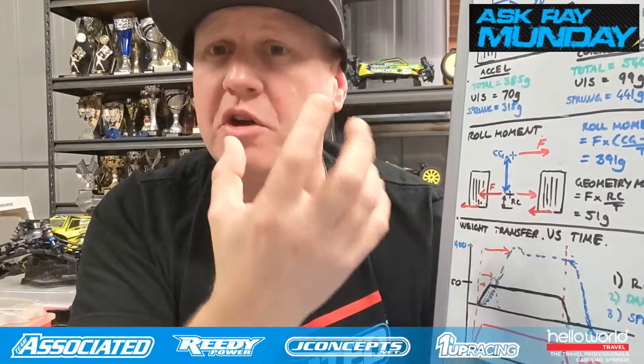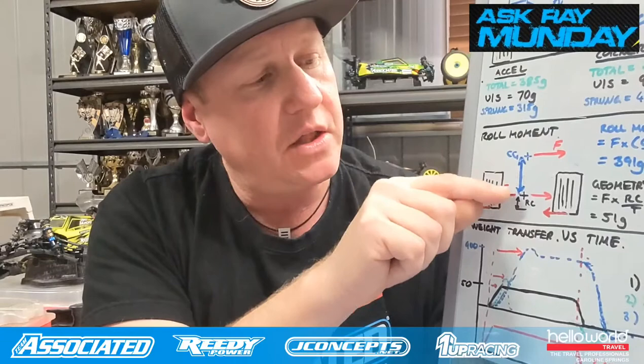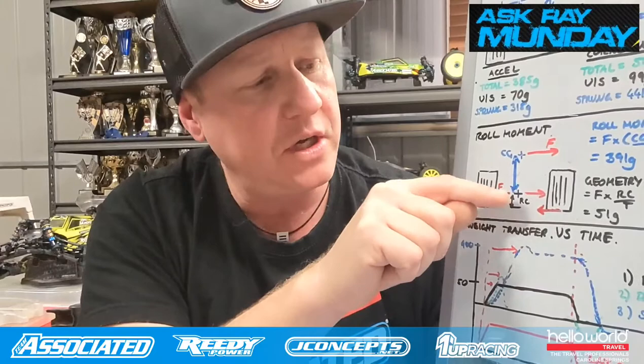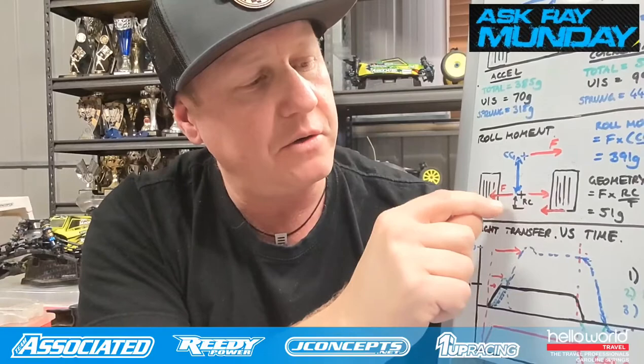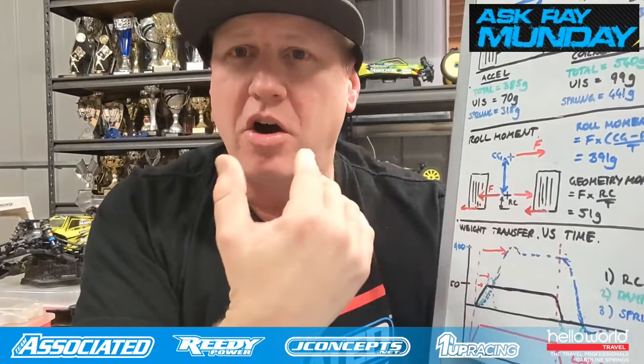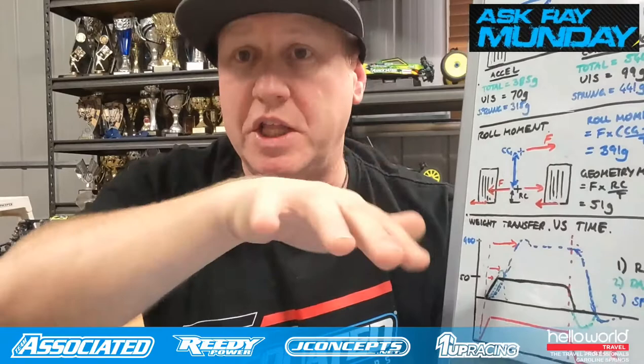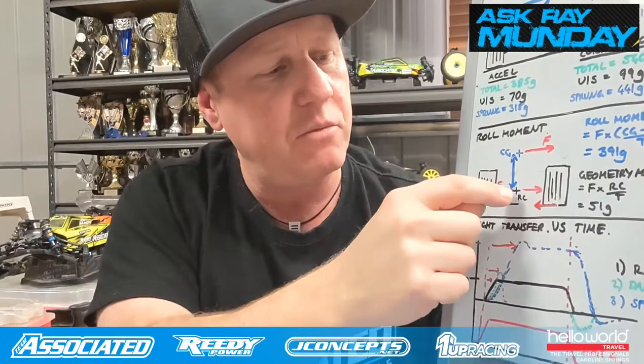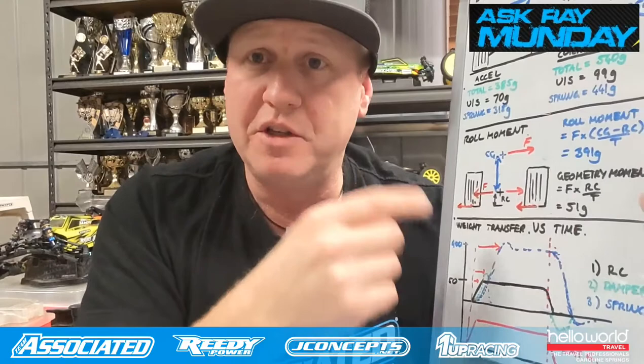We can't change the laws of physics — a certain amount of weight transfer always happens. The force transmitted to the chassis through geometry is the height of the roll center multiplied by the lateral force. The two components — sprung mass moment and geometry force — add up to give you the same total force, but the roll center's geometric component is transmitted directly to the ground without visible body movement. A high roll center means less roll angle in the sprung mass because there's less moment trying to rotate it, but it means more weight transfer coming through the suspension geometry.